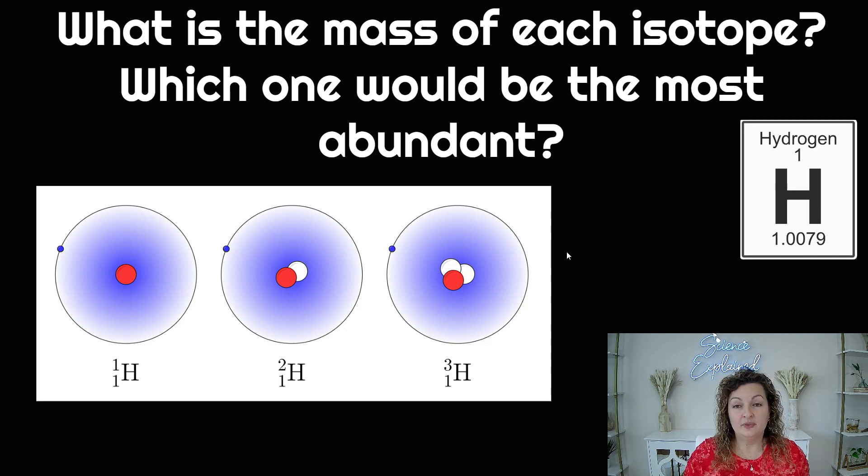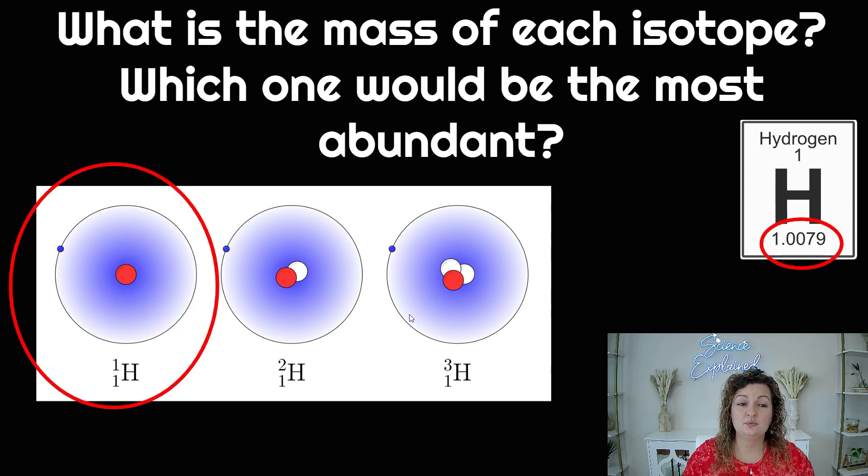Okay, so which one would be the most abundant? You can look at the periodic table to help you with this answer. If you look at the square of hydrogen and you look at the mass number, you can see that it is 1.0079. So this is very close to one. Because it is so close to one, it is definitely going to be the one that has the mass closest to one, which is this one.